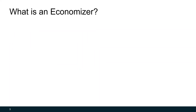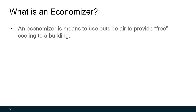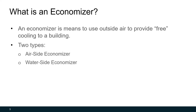So what is an economizer? Imagine you're in a building and it's 55 degrees outside, and our building air conditioning system typically supplies 55 degree air to keep the building cool. Why would we run our air conditioning system to condition air down to 55 degrees when the air outside is already at 55 degrees? What if we just use that outside air to cool the building? We can do that through an economizer — it's simply the means to use outside air to provide free cooling to a building. We can do that with an air side economizer, where we supply the air directly to the building, or a water side economizer, where we use the outside air to cool our chilled water system.